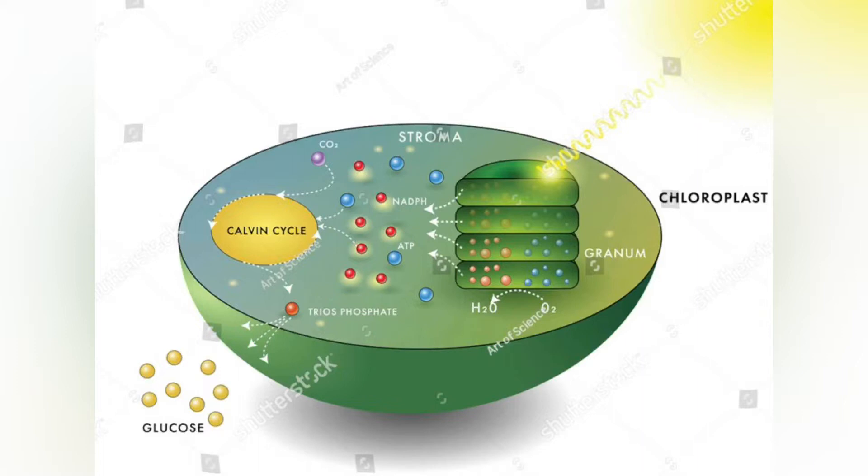Within the stroma are grana, and the sub-organelles are daughter cells, where photosynthesis is commenced before the chemical changes are completed in the stroma.